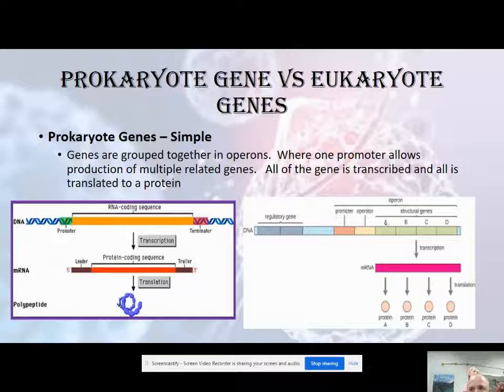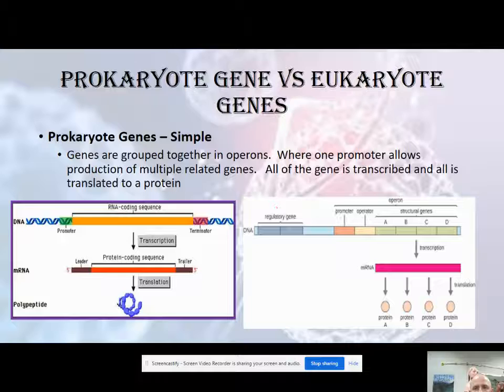Basically, in order for lactose to be broken down by a bacteria, it has to be able to get lactose in, so it has a protein that will transport lactose into the cell. Lactose needs to be broken down, so it has a protein that'll make lactase. What we're really going to get into is how these can be regulated — we have regulatory genes, promoters, and all these things we can use to control the production of proteins.